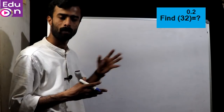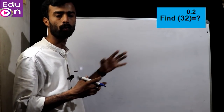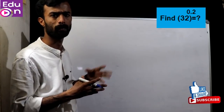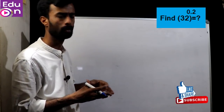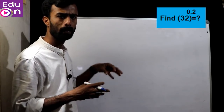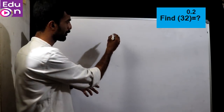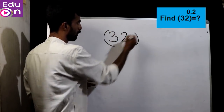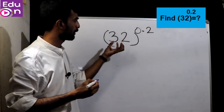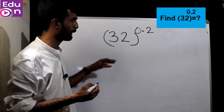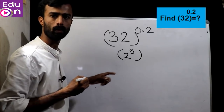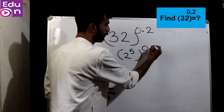So the next question: we will answer 32 hold raise to 0.2. We will answer 32 — we will multiply. 32 hold raise to 0.2 or 0.5. The question: 32 hold raise to 0.2. Now 2 raise to 5 is 32 — hold raise to 0.2.